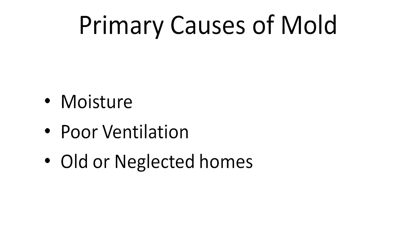And finally, older homes that have been abandoned for months or years, or that have been neglected, are a perfect environment for many kinds of molds to thrive. Pipes left sweating for years, poor ventilation, and roof leaking issues all provide the ideal place for fungi to grow, and this will lead to a mold problem if not addressed properly.